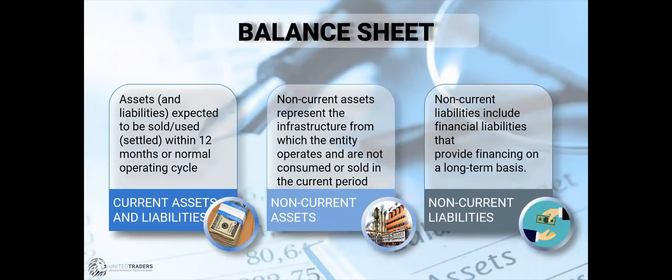Continuing the balance sheet discussion: current assets are expected to be sold or used within 12 months or a normal operating cycle. Non-current assets — the infrastructure from which the entity operates — are not consumed or sold in the short term. Similarly, non-current liabilities are mainly long-term debt. The scope of these categories is broad, and we'll go through examples.